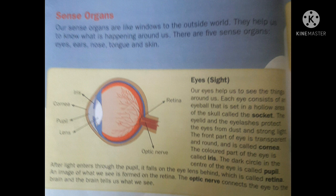Then the optic nerves are there. They connect the eye to the brain and carry the information to the brain. The brain tells us what we see in the erect form.